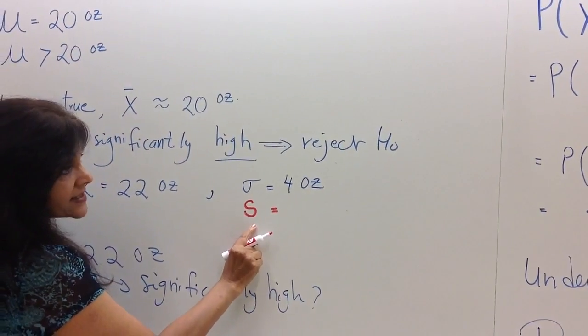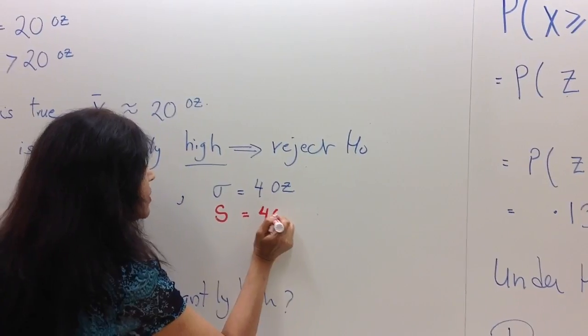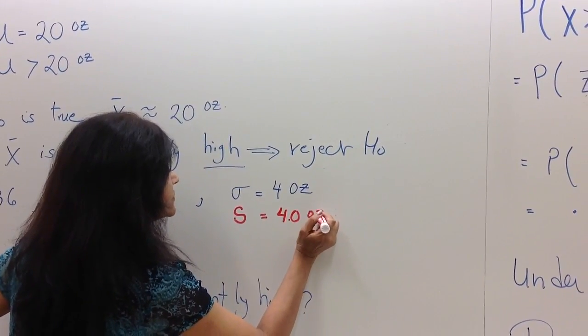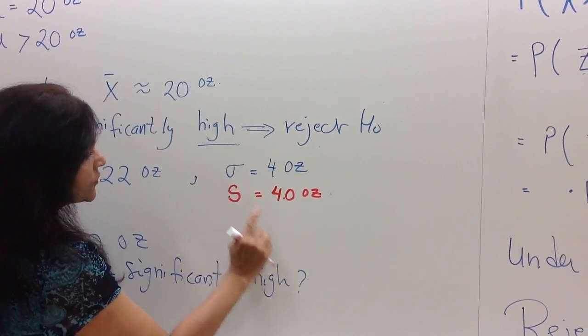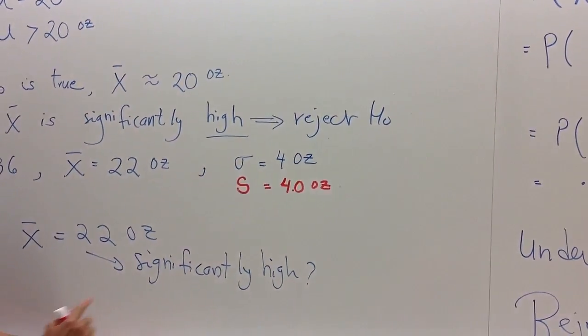but I'm going to use the letter S because that is from the sample. And let's suppose that that S was also 4 ounces. They don't have to be equal, folks, but this is just one number I have selected in an example.